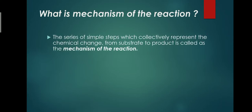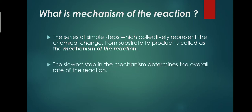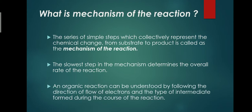The mechanism of a reaction is the series of simple steps which collectively represents the chemical change from substrate to product. The slowest step in the mechanism is considered the rate-determining step for the overall reaction. Simply put, mechanism means we are tracing the path of a reaction — where bonds break and where new bonds form.